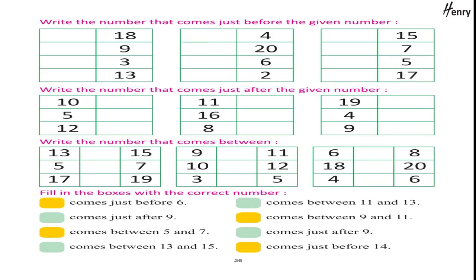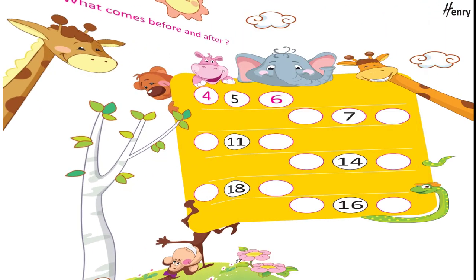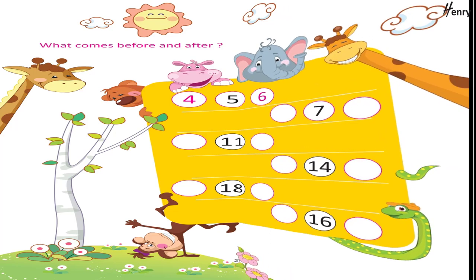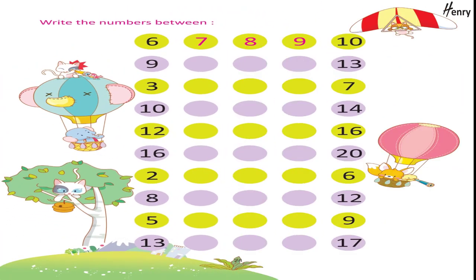Write the number that comes just before the given number. Write the number that comes just after the given number. Write the number that comes between. Fill in the boxes with the correct number. What comes before and after? Write the numbers between.